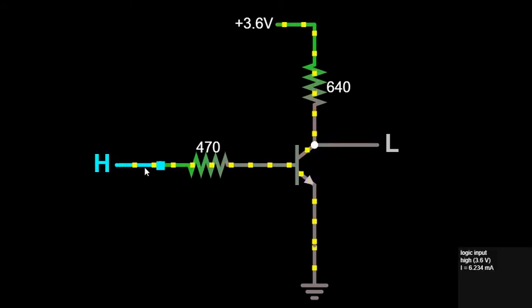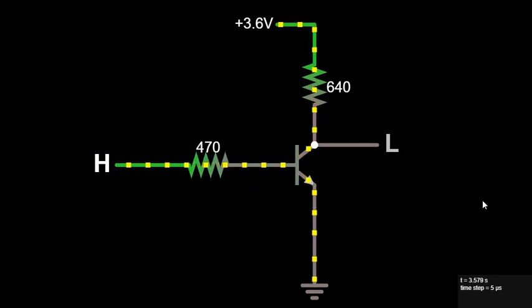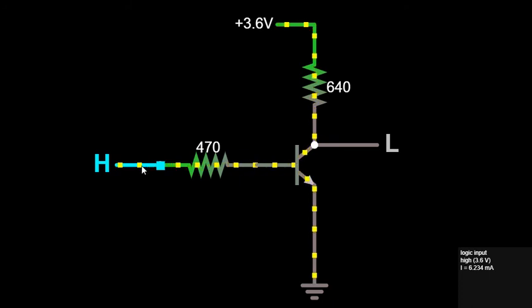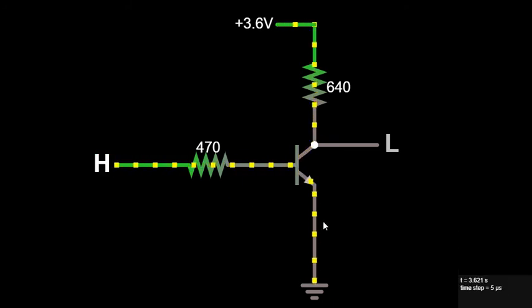So what will happen then? You will get the vice versa of this. You can get, if here is high, you can get the high here, and if here is low, input is low, so you will get the low here.